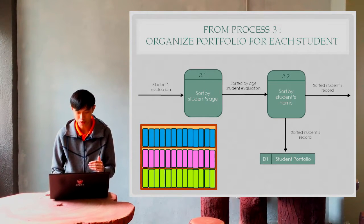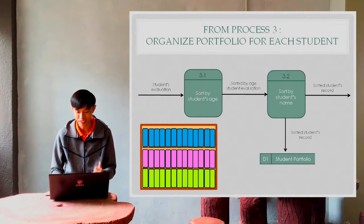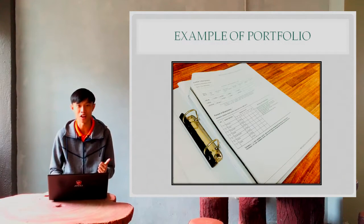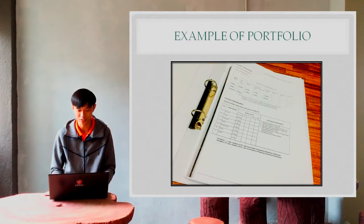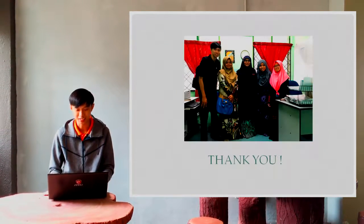The sorted student record will go to the database just as in diagram zero, and the other will go to process four. This is an example of our student portfolio. They have forms for the teachers to fill in with the requirements inside. Thank you.